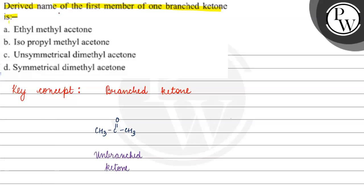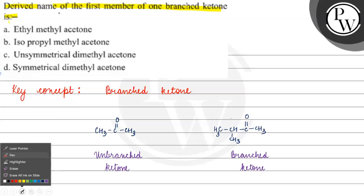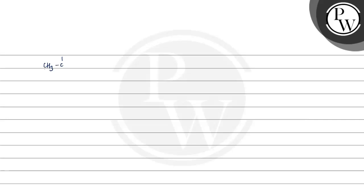If we talk about a branched ketone, what will happen? We basically have something like this — a branched ketone structure. Now, looking at option A, ethyl methyl acetone — this group here is our group, and this represents an unbranched ketone.